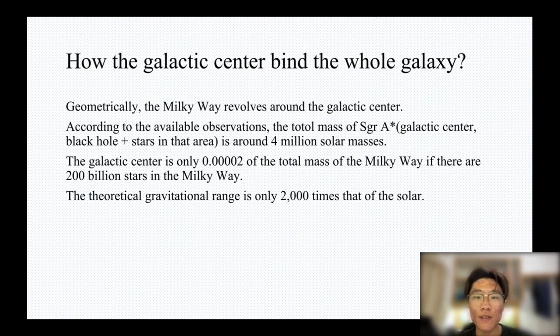The theoretical gravitational range is only 2,000 times that of the solar. That's obviously not enough for the massive Milky Way. So how does the galactic center bind the whole galaxy?